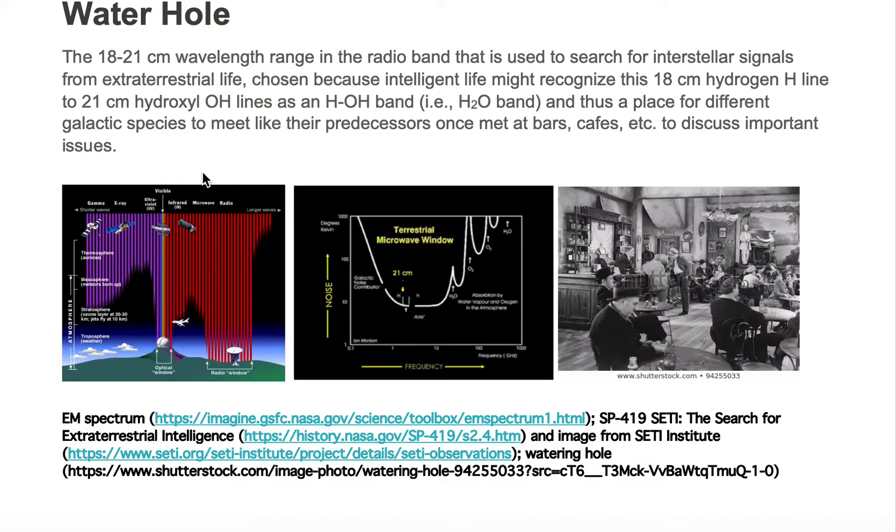Of all these bands of light, only the radio band and mostly the visible band pass through Earth's atmosphere easily and can reach the ground. So if we want to communicate with galactic species, we would want to pick the radio band or the visible band.